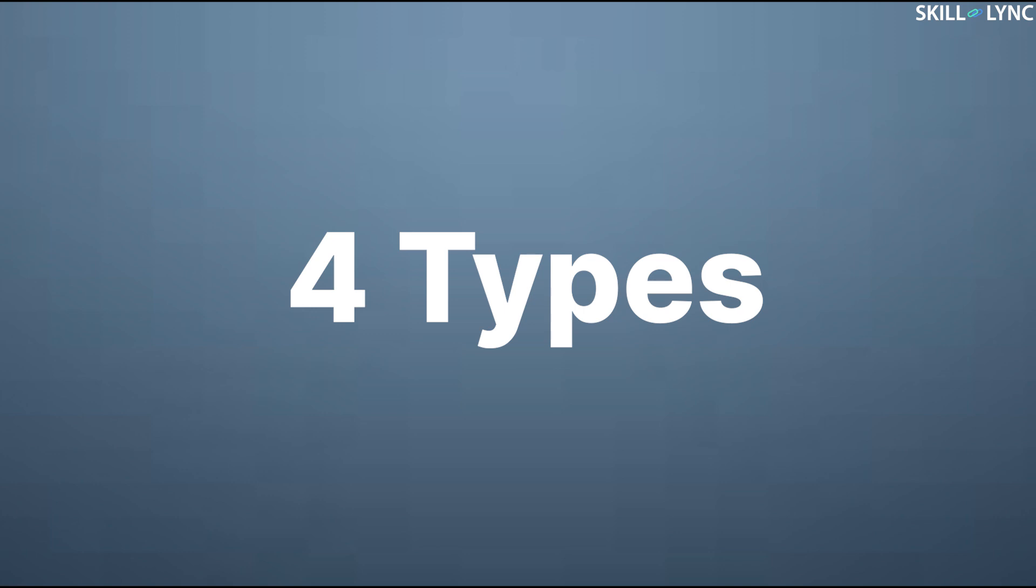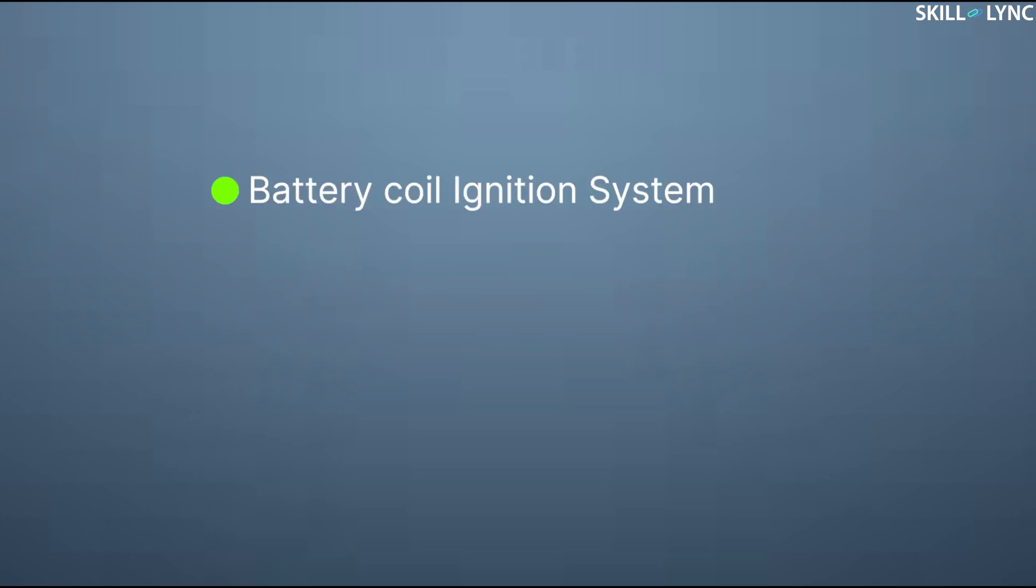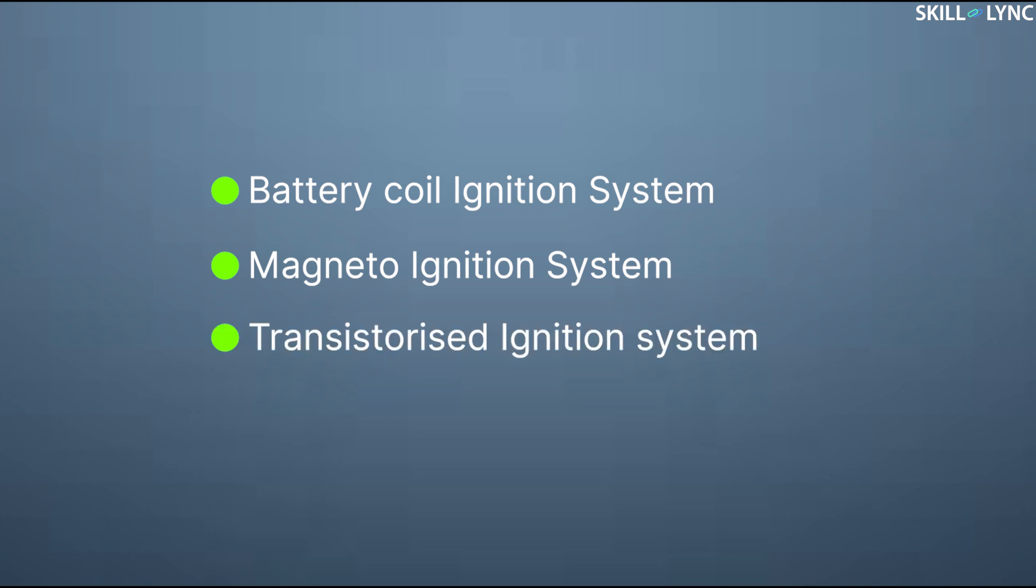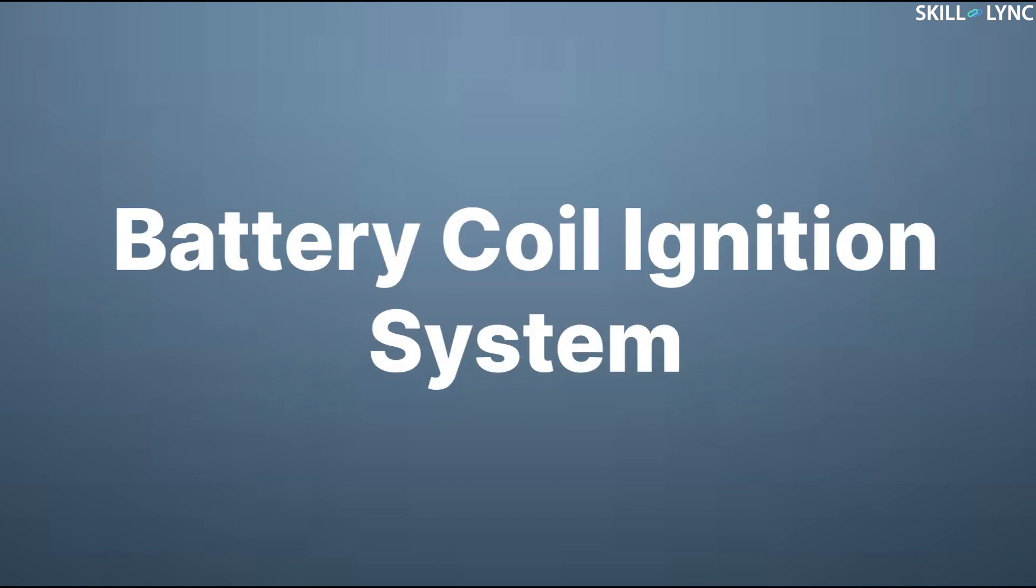The ignition systems used in automobiles can be broadly classified into four types: battery coil ignition system, magneto ignition system, transistorized ignition system, and capacitive discharge ignition system. In this video, we are going to discuss battery coil ignition systems.